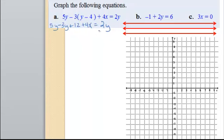We need to get all of the x's and y's on the same side and all of the constants on the other side. So, let's subtract 2y and let's subtract 12 from both sides. So, this is 0 and this is 0.